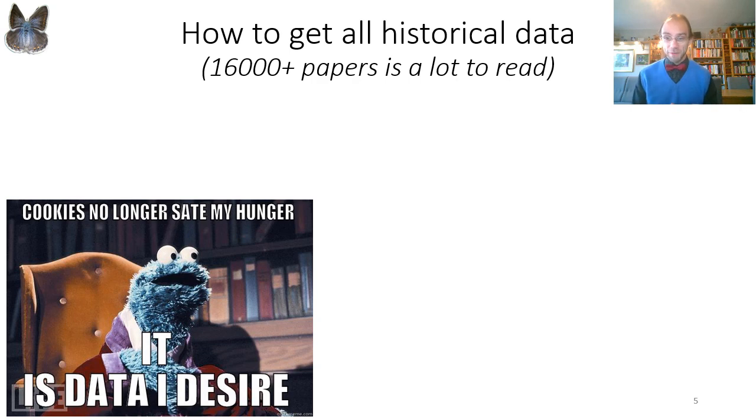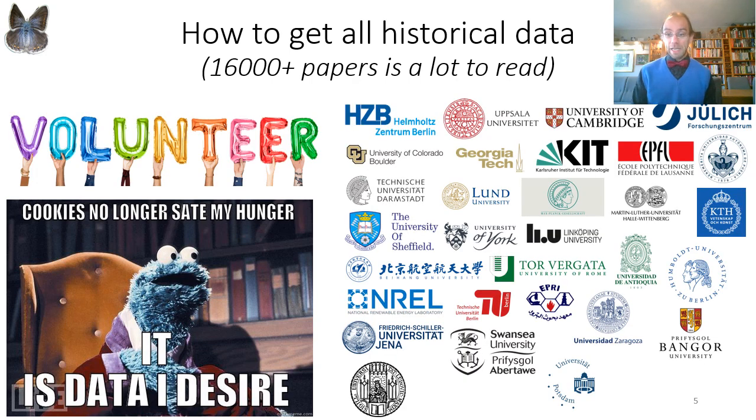So we have more than 16,000 perovskite papers, multiple devices per paper, and 100 parameters per device. Now you may start to think that this sounds like a lot of work, and how did we actually get all that data? Indeed it has been a huge amount of work to get data, but the answer has been by the help of volunteers. I have simply asked everyone I know and have worked with before to see if they would be willing to help me in doing this, and the response has been overwhelmingly positive. I've been able to gather a team of around 90 persons around the globe that have helped me going through the data.